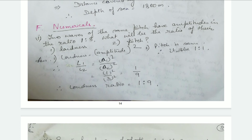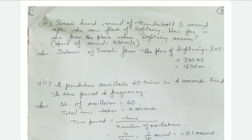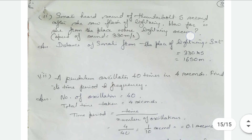Numerical 2: Sonali heard the sound of a thunderbolt five seconds after she saw a flash of lightning. How far is she from the place where lightning occurred? Speed of sound in air is 330 meters per second. Distance equals speed multiplied by time: 330 times 5 equals 1650 meters. So Sonali is 1650 meters away from the lightning.